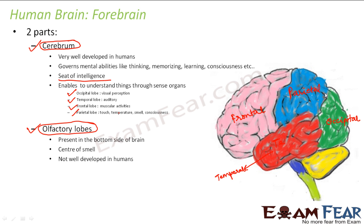The other part of the forebrain is the olfactory lobes, present on the bottom side of the brain — not visible in this side view. The word olfactory comes from smell, so it is the center of smell. It is not very well developed in humans, though we do have the sense of smell. In certain animals like dogs, however, the olfactory lobes are very well developed, giving them a very great sense of smell. These two — cerebrum and olfactory lobes — are the major parts of the forebrain.